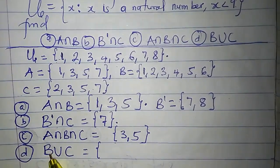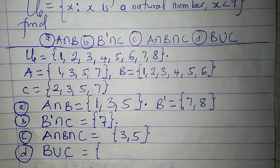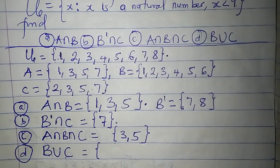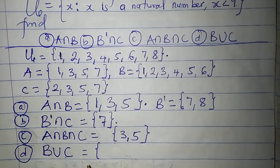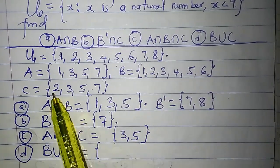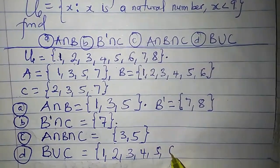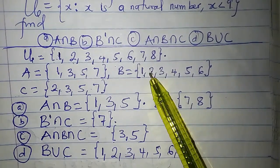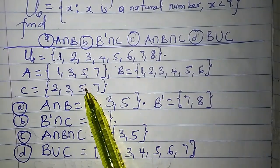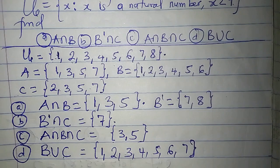What about B union C? For the union of sets B and C, we combine all the elements together without repetition. B has 1, 2, 3, 4, 5, 6 and C has 2, 3, 5, 7. The union is 1, 2, 3, 4, 5, 6, 7. Note that 2, 3, and 5 appeared in both sets, but in the union we write each element only once. So B union C is {1, 2, 3, 4, 5, 6, 7}.